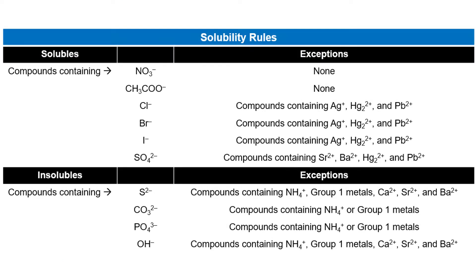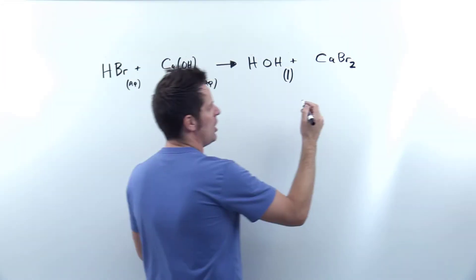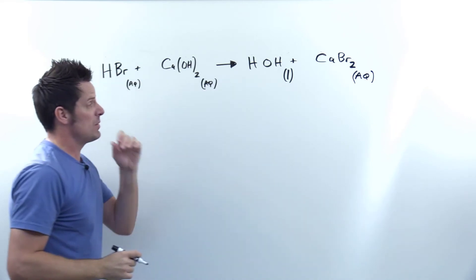What about calcium bromide? Looking at the solubility table, calcium doesn't appear, but bromide does — it's in the top half, the solubles section. Bromides are always soluble in water except for silver bromide, mercury bromide, or lead bromide. Calcium is not one of those three exceptions, so calcium bromide is soluble, and we write aqueous next to it.